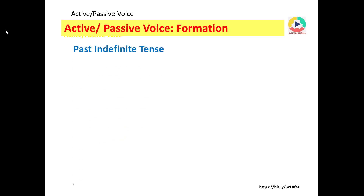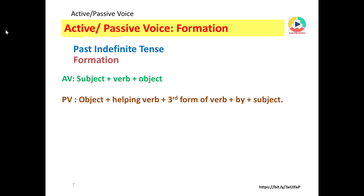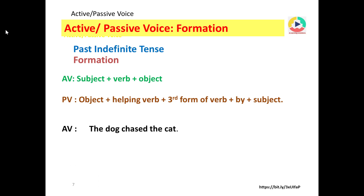In past indefinite tense, the formation is: active voice — subject + verb + object. In passive voice: object + helping verb + third form of verb + by + subject. Example: the dog chased the cat — dog is the subject, chased is the second form of the verb, cat is the object.